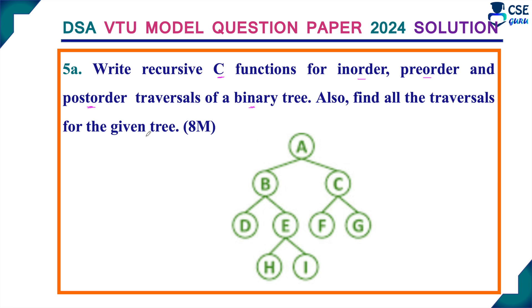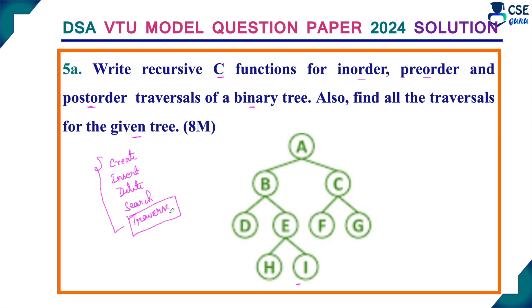Also find all the traversals for the given tree. We need to find in-order, pre-order and post-order traversal. In a binary tree, we can perform different operations: creating a binary tree, insert, delete, search and traverse. Traversal means visiting each node in the binary tree exactly once. There are three types of traversals: in-order traversal, pre-order traversal and post-order traversal.